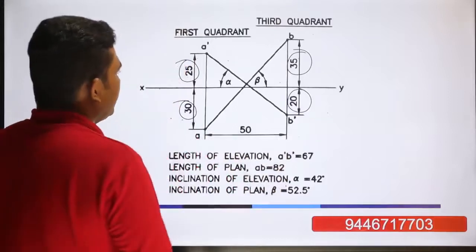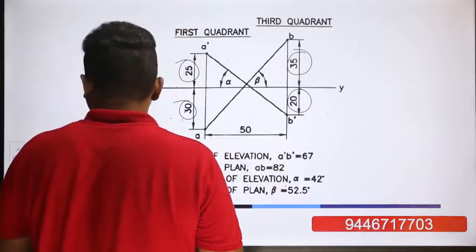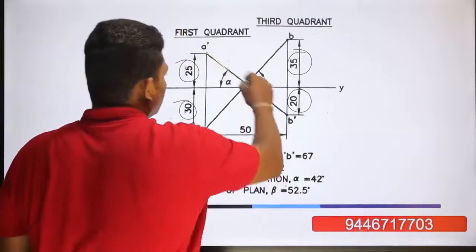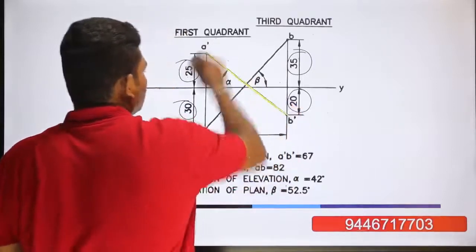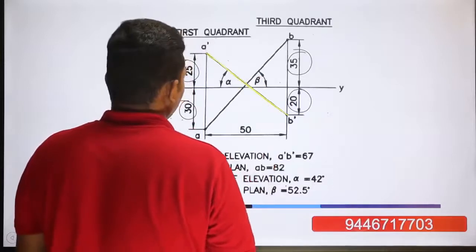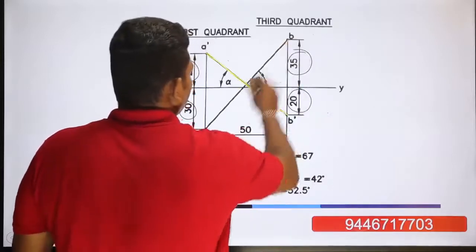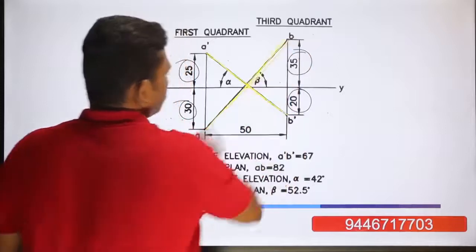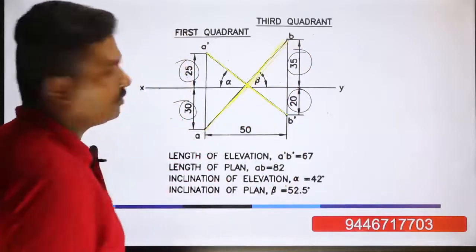Then we join the A' and B' points for the front view. We also join the A' and B' points for the top view, connecting the projection from the A' point to complete both the front view and the top view.